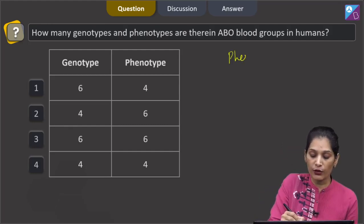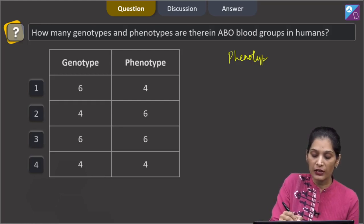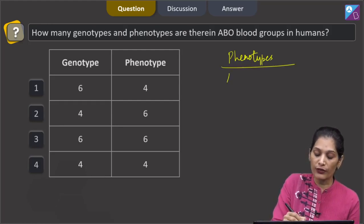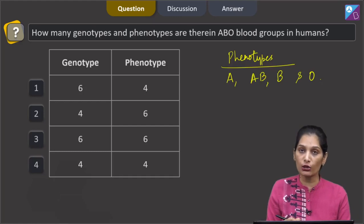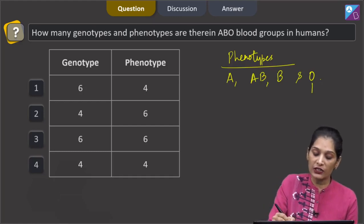If we go for the phenotypes, we know that there are four phenotypes which are A, AB, B and O. And if we see the genotype for them, definitely the genotype for O will be I O I O.